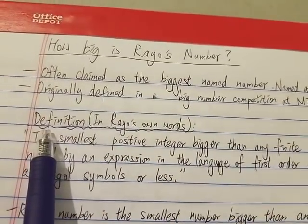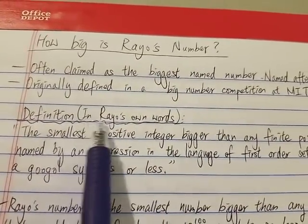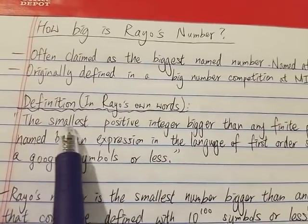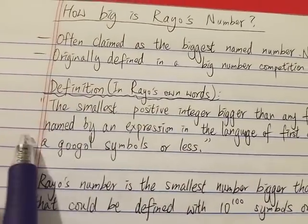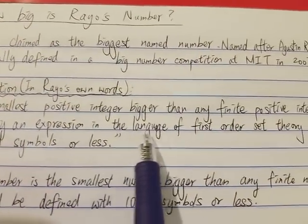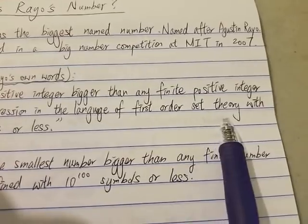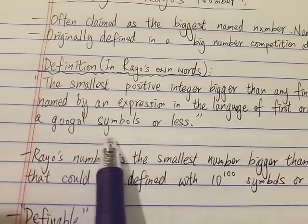So what is his definition? In Rayo's own words, it is the smallest positive integer bigger than any finite positive integer named by an expression in the language of first order set theory with a googol symbols or less.